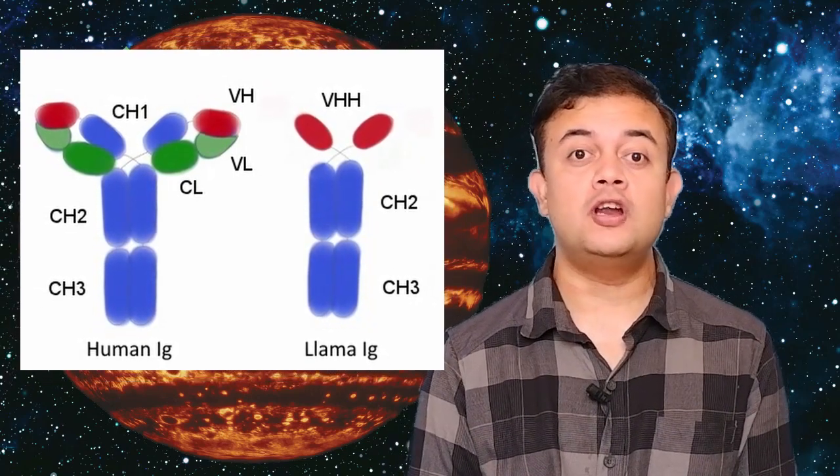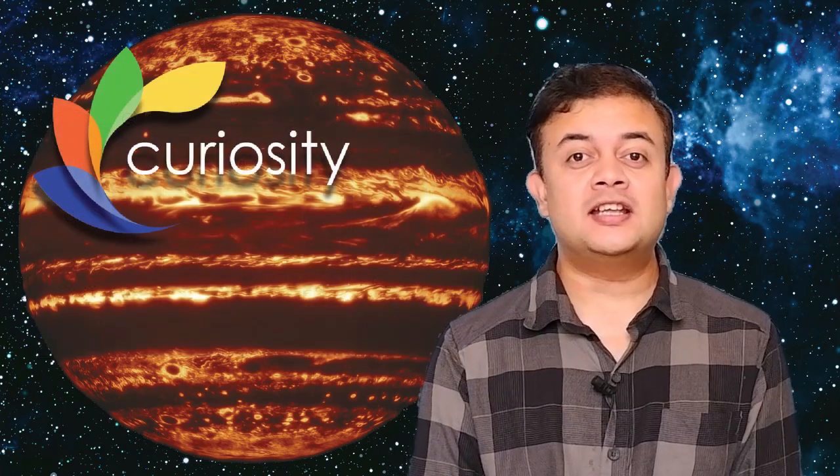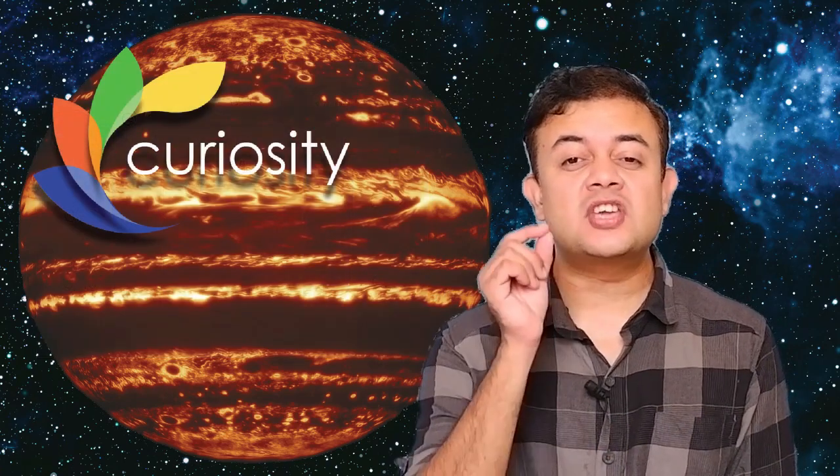This small antibody that llamas produce can easily access nanoscale size crevices and pockets on the spikes of the coronavirus, something human immunoglobulin cannot do. The spikes are the weapons of coronavirus - these protein projections in red can penetrate mucosal tissues of human beings like nasal passages, eyelids, or the intestine. A good analogy of these coronavirus spikes are flails or morning stars, the medieval weapons with sharp spikes that attack the enemy.